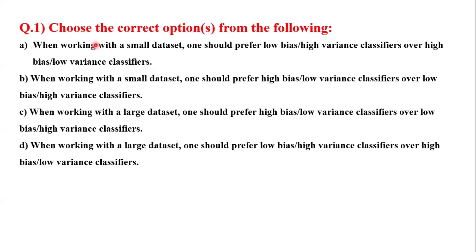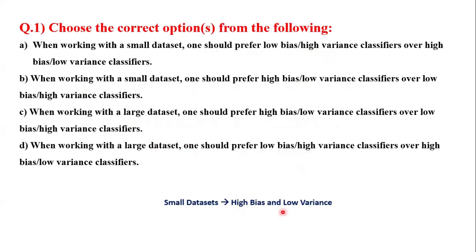This is my first question. Let's choose the correct options from the following. Option A: when working with small datasets, one should prefer low bias, high variance. Option B: when working with small datasets, one should prefer high bias, low variance. Option C: when working with large datasets, one should prefer high bias, low variance. Option D: when working with large datasets, one should prefer low bias and high variance. To answer this question, we have to remember that for small datasets, one should prefer high bias and low variance.